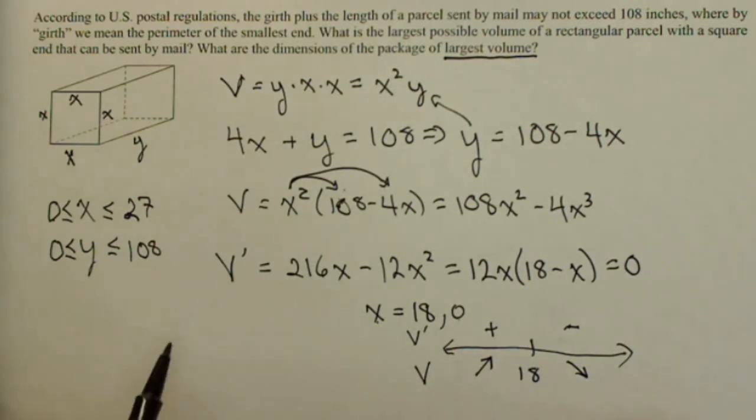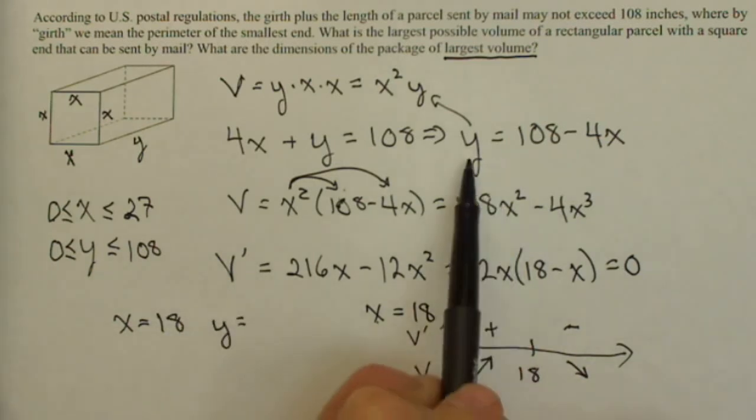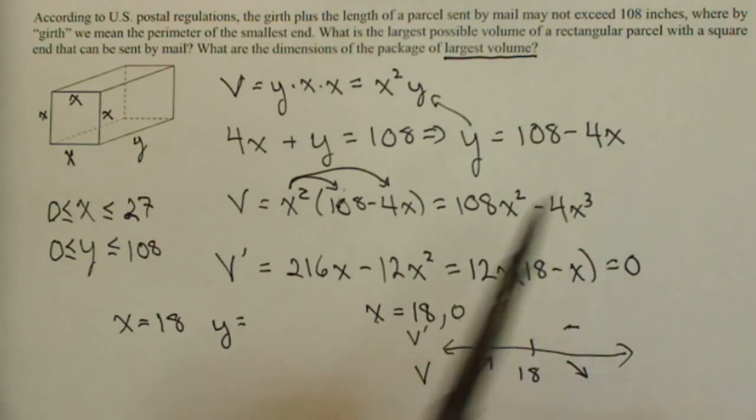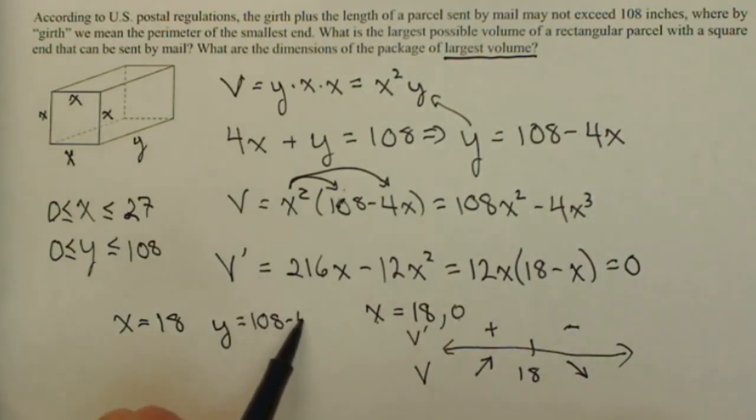Now let's find out what that maximum possible volume is. Well, we know that x has to be 18. And then the corresponding y, well, remember we've got an equation for y here, is going to be 108 minus 4 times 18, which equals 36 for our y.